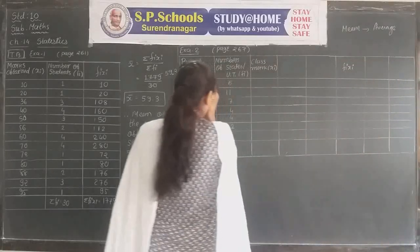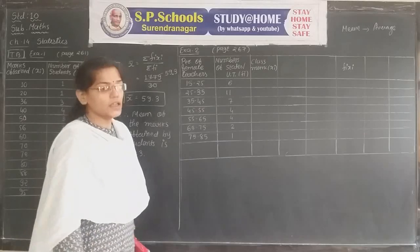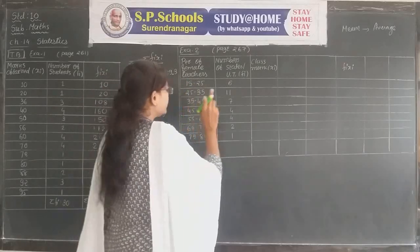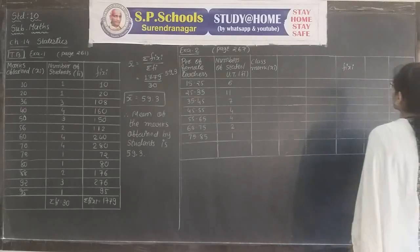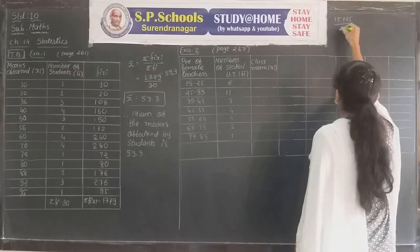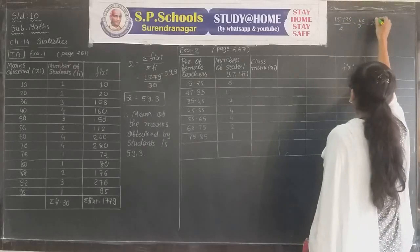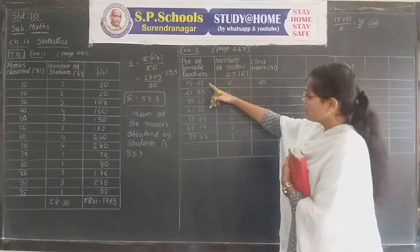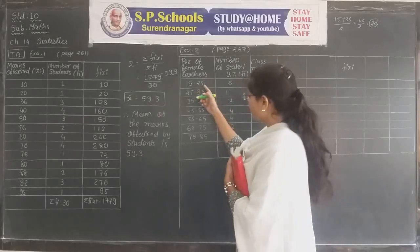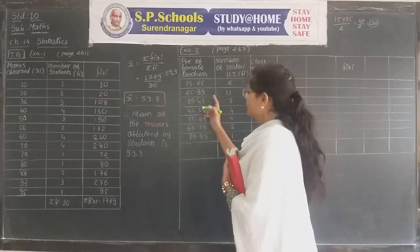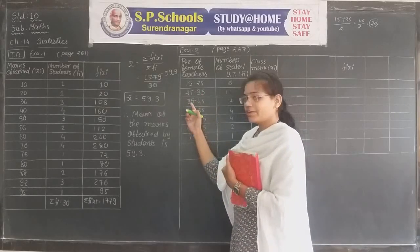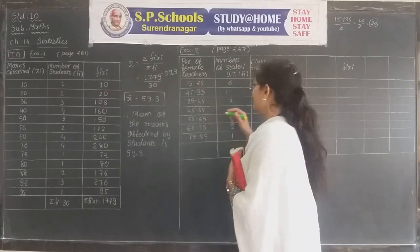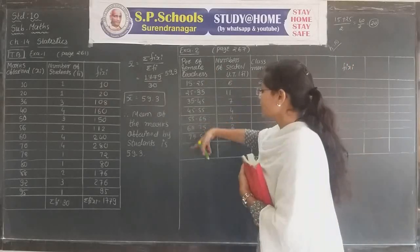To find the class mark xi: add upper limit and lower limit, divided by 2. For the first interval: 15 + 25 = 40, divided by 2 = 20. The class mark for the first class interval is 20. The class size of all intervals is 10 - since 25 minus 15 = 10, h = 10. This is a continuous frequency distribution.